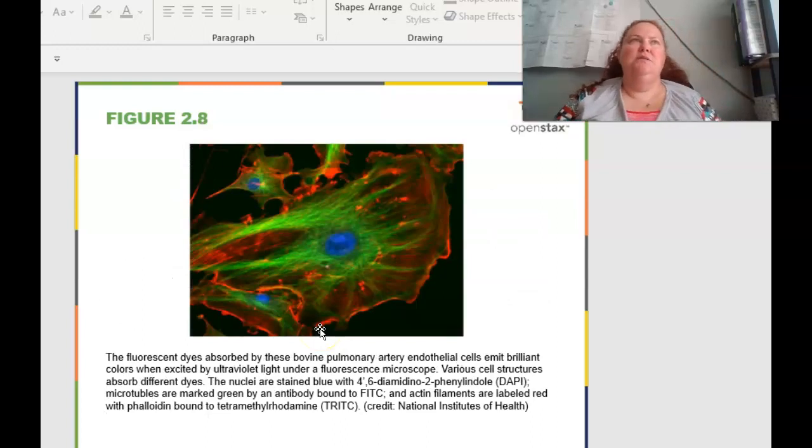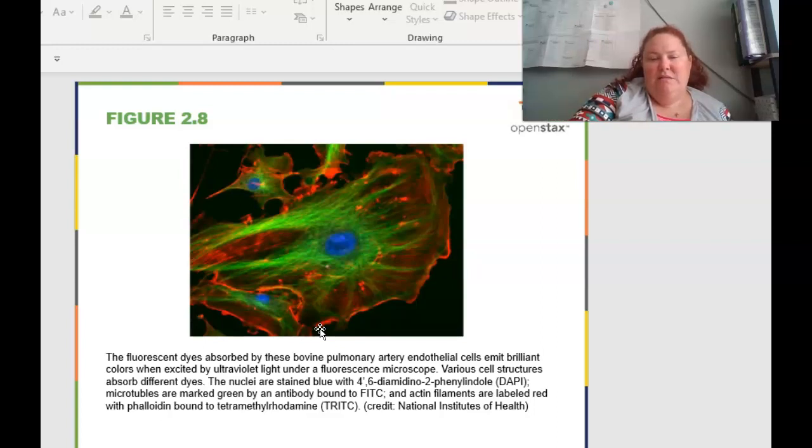The electromagnetic spectrum ranges from high-frequency gamma rays to low-frequency radio waves. And the visible light is relatively small, it's only this tiny box range of electromagnetic frequencies that can be sensed by the human eye. On the electromagnetic spectrum, visible light falls between UV and the infrared light. During my PhD, I actually did a lot of fluorescent microscopy. The fluorescent dyes that are absorbed by these cow pulmonary artery endothelial cells emit brilliant colors when excited by UV rays under fluorescent microscopy. Basically, you can use different tags on different antibodies, and they can then fluoresce under different wavelengths.